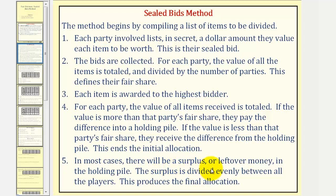Step five: in most cases there will be a surplus or leftover money in the holding pile. The surplus is divided evenly between all players. This produces the final allocation.